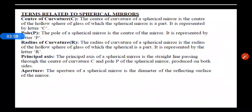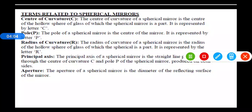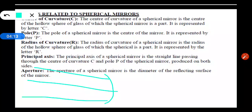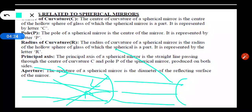A concave mirror is also known as a converging mirror because the rays falling on it will converge towards each other. Whereas in the case of a convex mirror, the rays falling on it will diverge from the point of reflection — they will move away from each other and never meet. That is why a concave mirror is known as a converging mirror and a convex mirror is known as a diverging mirror.